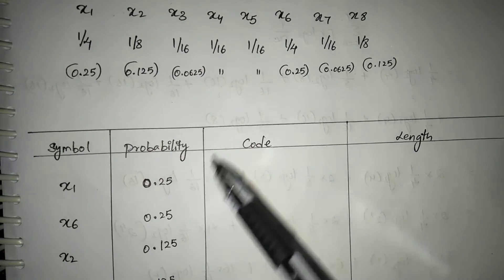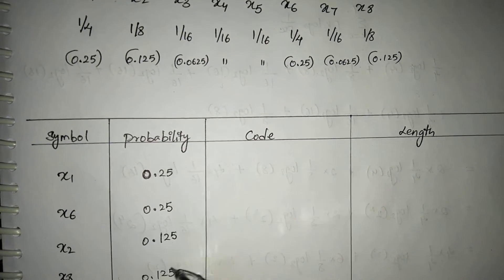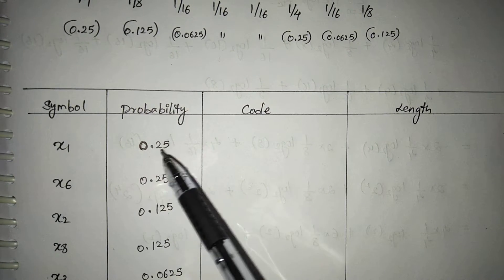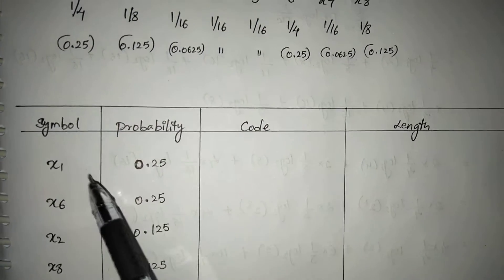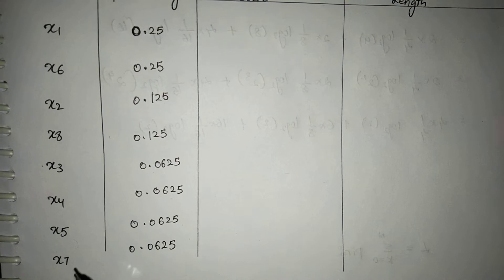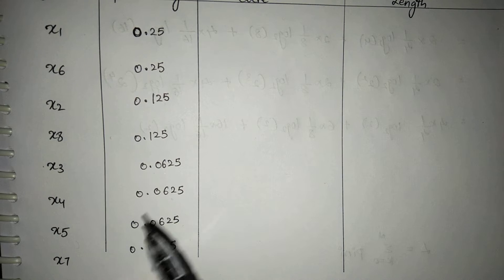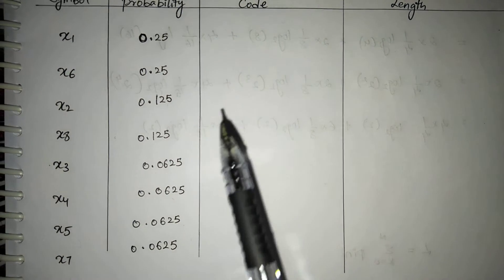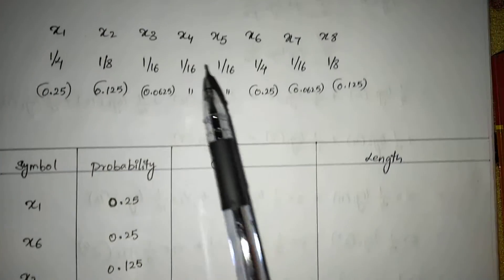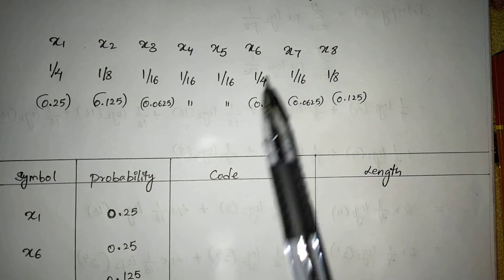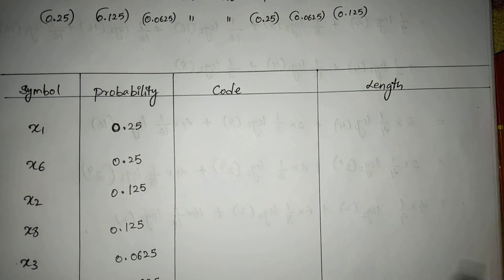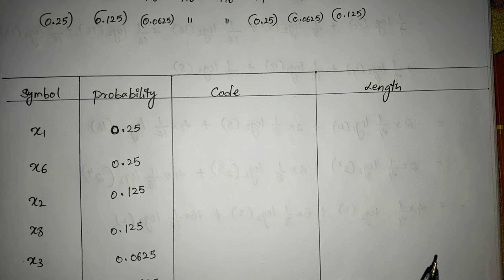After arranging in descending order, the symbols are arranged accordingly. The top probability 0.25 is assigned symbol h1 and the least probability 0.0625 is assigned h7. Note that 0.25 appears for both symbols h1 and h6. After arranging these probabilities in descending order, we will assign codes.